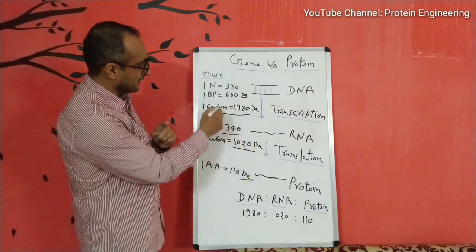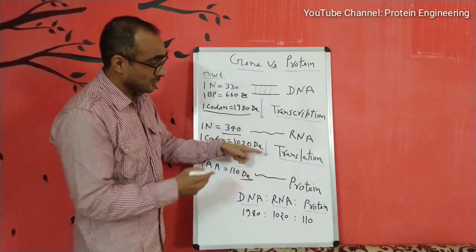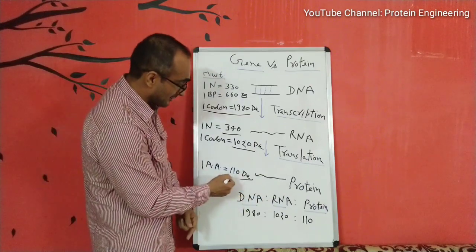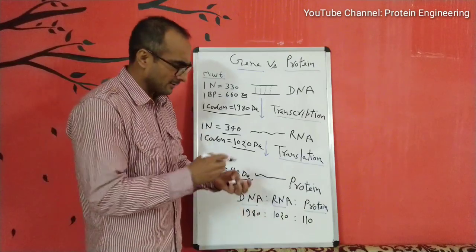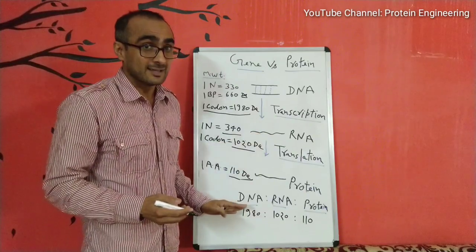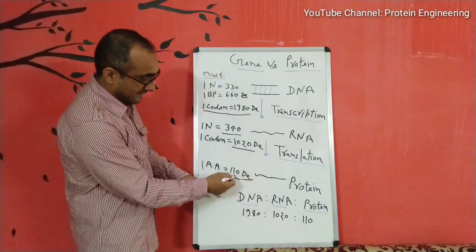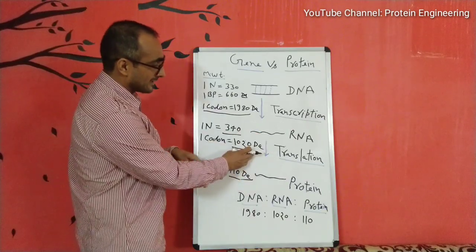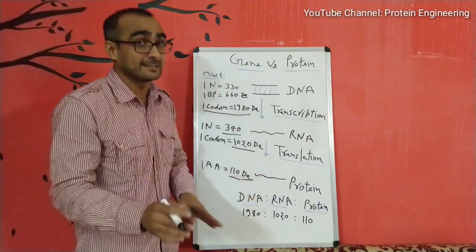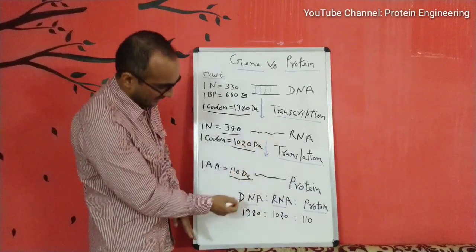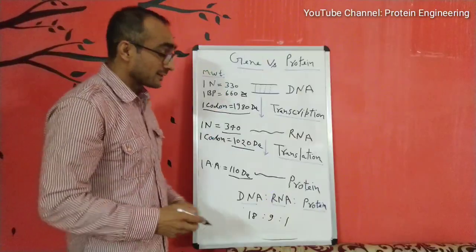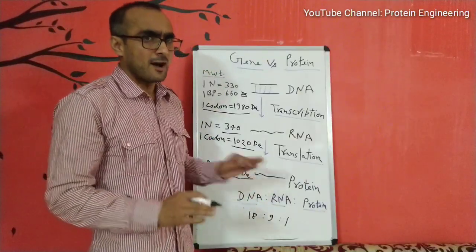So one codon in DNA is 1980 daltons. When converted into RNA, the same sequence has an average mass of 1020 daltons. And when that codon is converted into a single amino acid in protein form, the mass is reduced to 110 daltons. This is a very common question asked in biological science and molecular biology: which is bigger in size, a gene or the product of the gene — which may be RNA or protein? It's clear that the mass of one amino acid is 110 daltons, formed from 1020 daltons of RNA, which itself comes from 1980 daltons of DNA sequence. This means DNA is always bigger in size than its products RNA and protein. Their ratio is DNA:RNA:protein = 1980:1020:110.